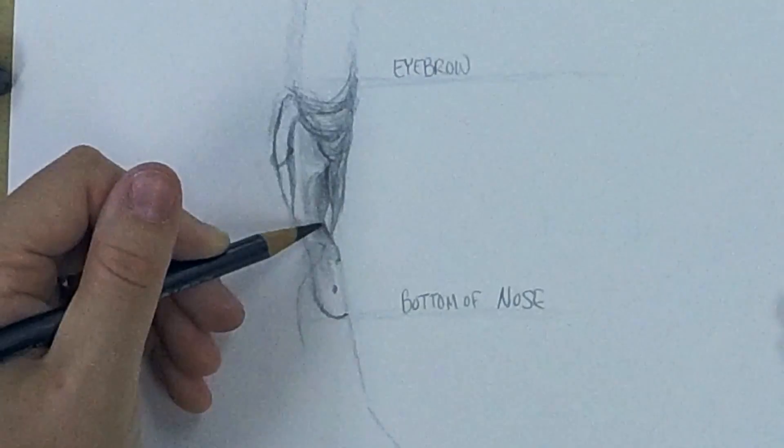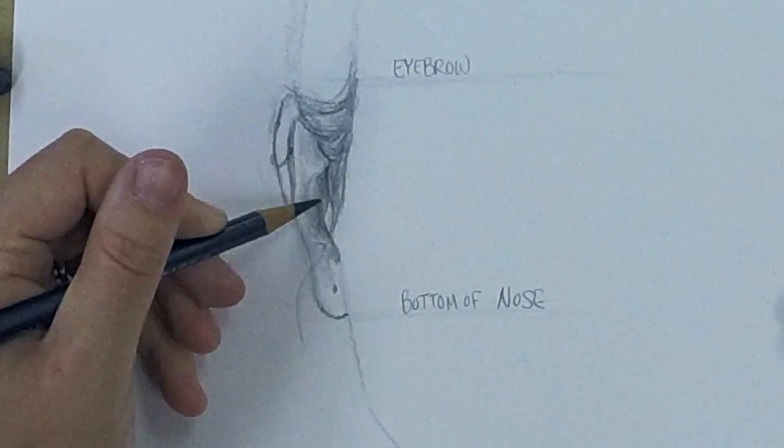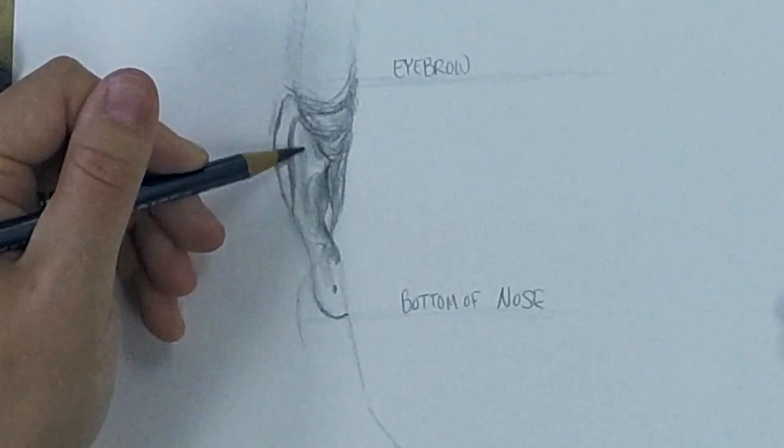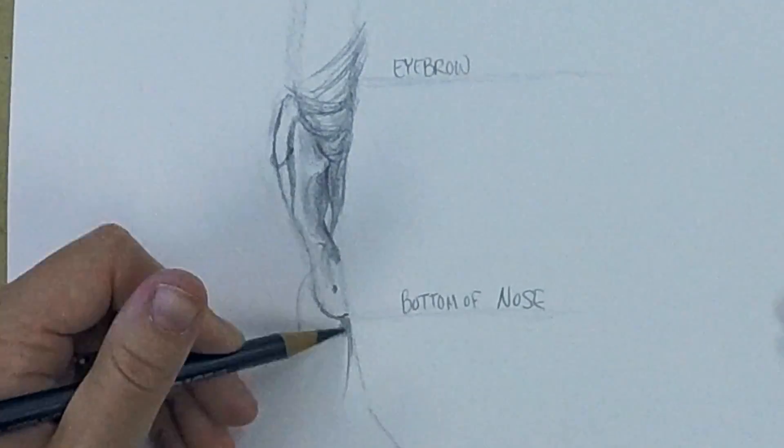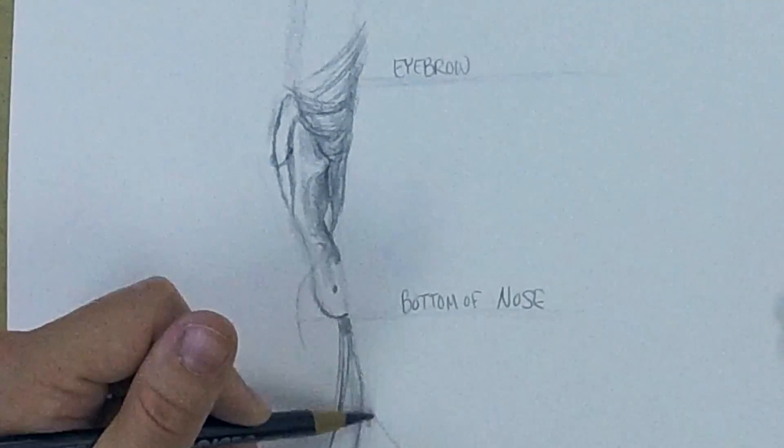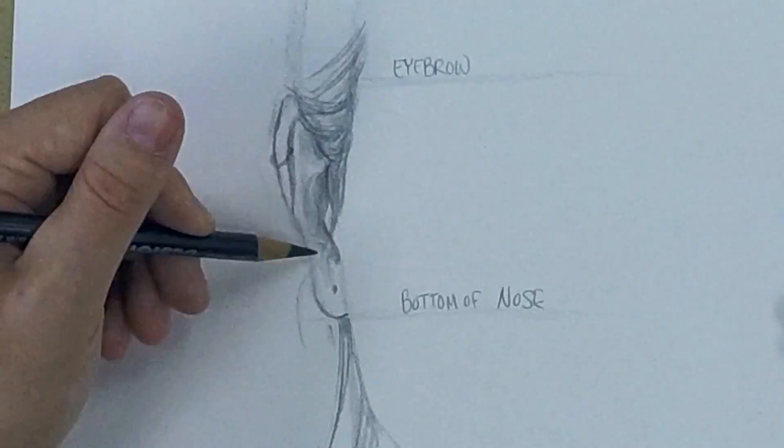Just to clean things up and give a little more definition, we might have some darker shadows around the ear canal and up by the rook. Then we'll just add some hair around the jawline to give it a little more definition.